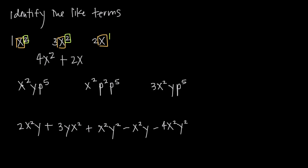In my second example, I have x squared y p to the fifth. If I try to identify my variables here, I have x, y, and p. I need to look for another term that also has x, y, and p. The second term doesn't — it just has x and p — so I know these first two are not like terms. But this third term has x, y, and p. So now all I need to verify is whether I have the same exponents.